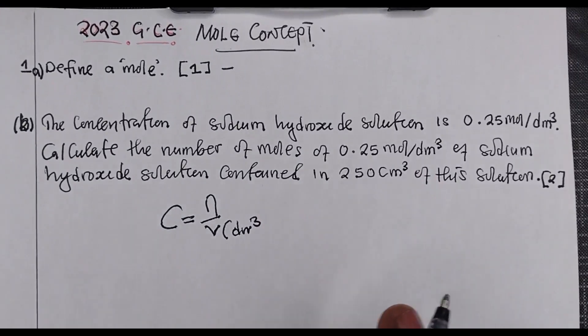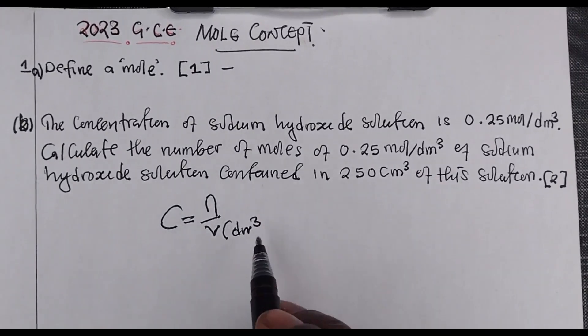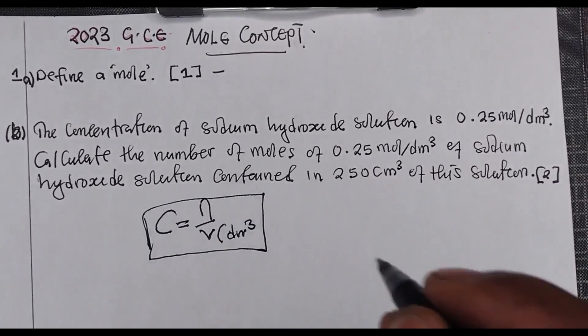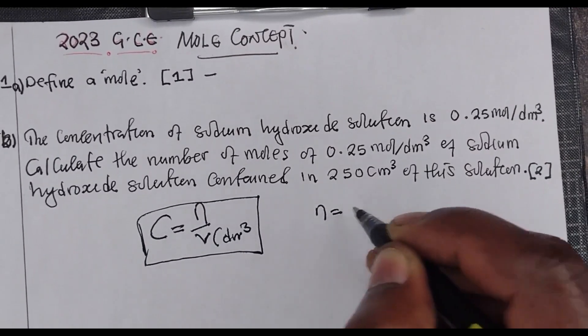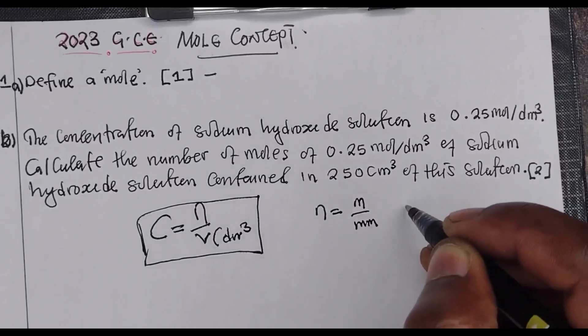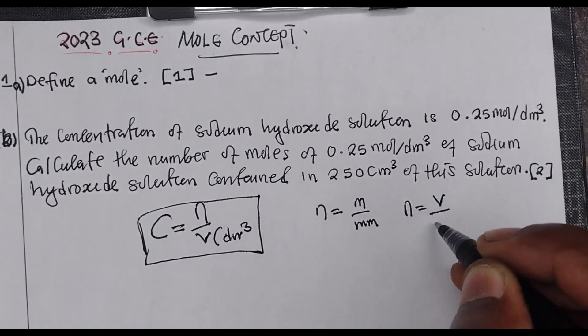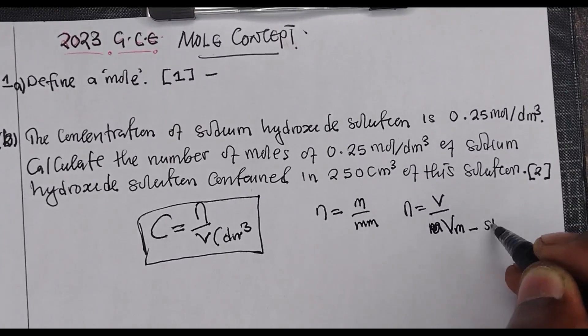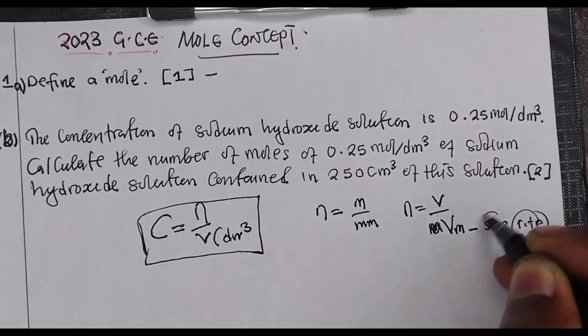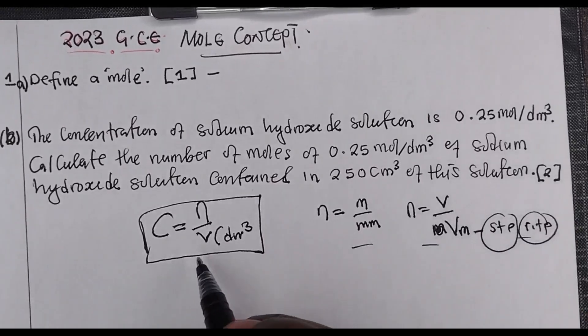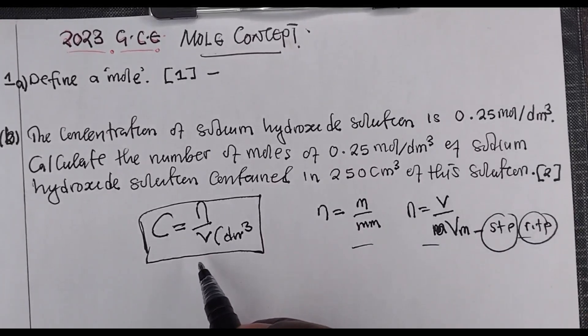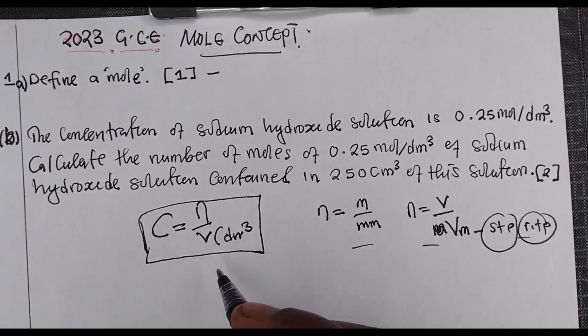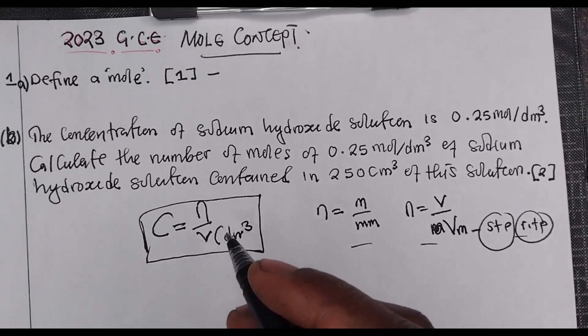So in this case, we are finding the number of moles. We are going to use this formula because we cannot use the other formulas for given mass. There are two formulas you need to know: mass given over molar mass, and also number of moles equals given volume over molar gas volume at specific conditions like STP or RTP. In this case, we use concentration equals n over V because it has provision for concentration and volume. Look at what you're given and find the possible formula.